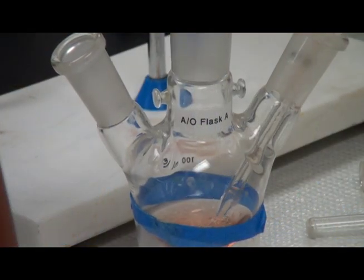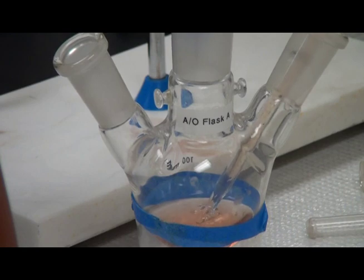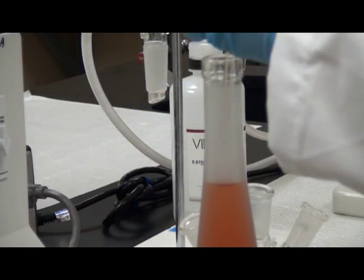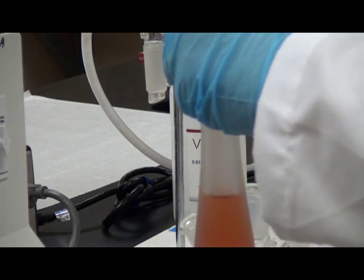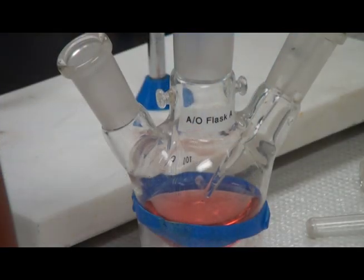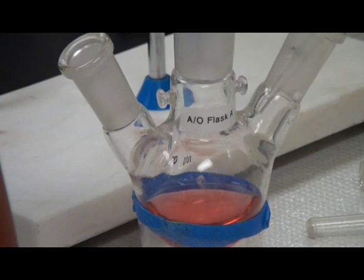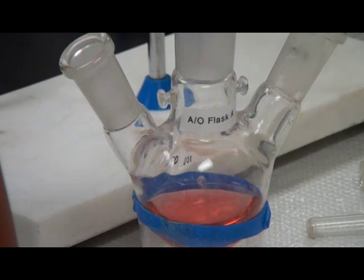Pipette 20 ml of your sample into the 100 ml round bottom flask. This sample should be pulled as close to the time of analysis as possible for the most accurate results. Then pipette 10 ml of the 25% phosphoric acid into the flask with the sample.